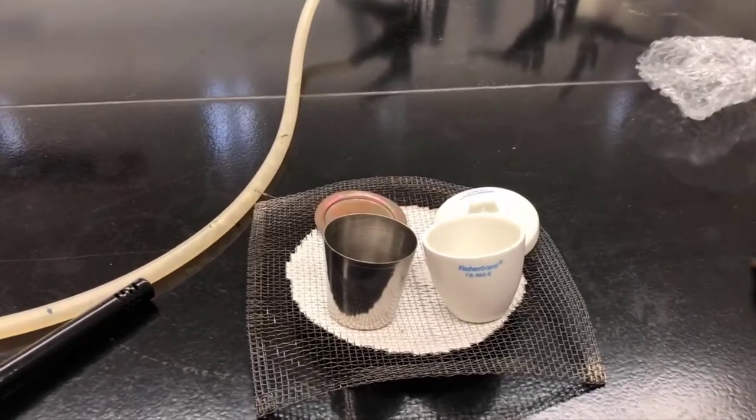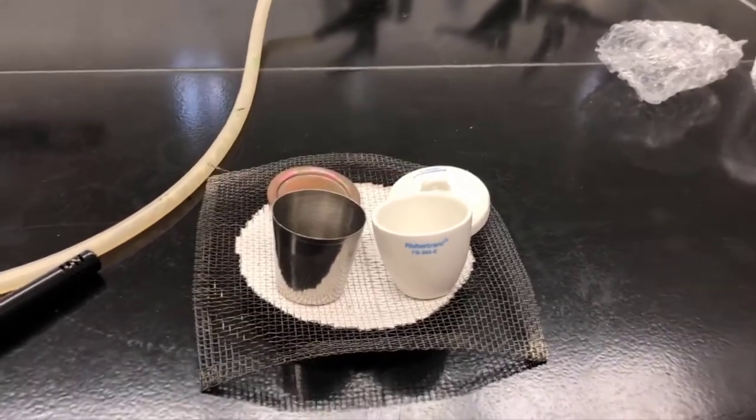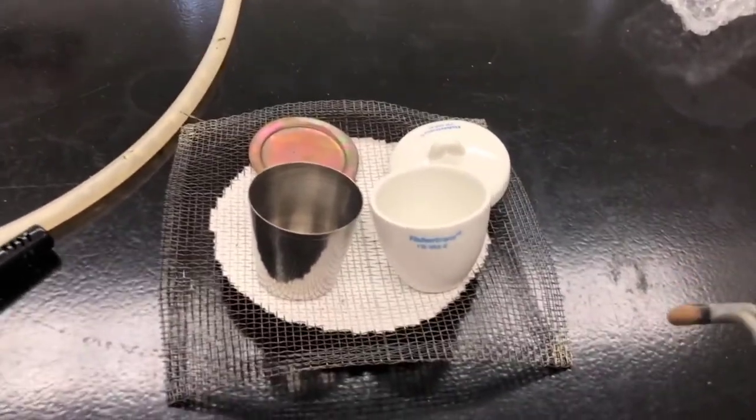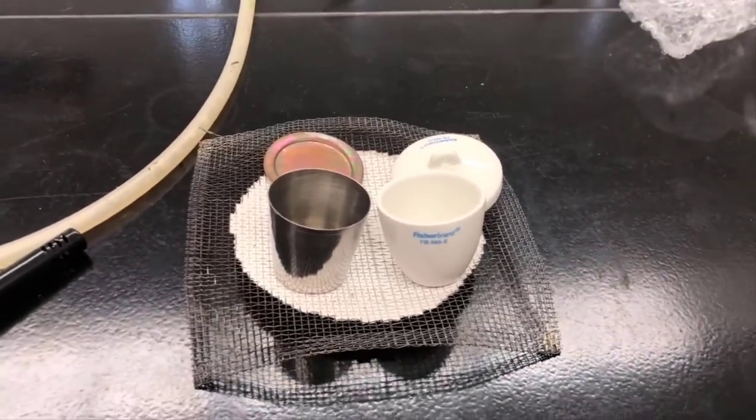There's a couple of examples of crucibles. The one on the left is a steel or stainless steel crucible, and on the one on the right, this is porcelain. That's what we'll be using in class.